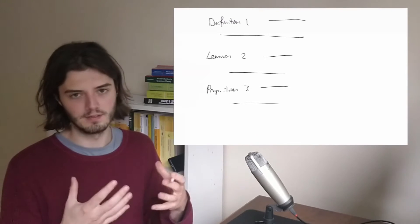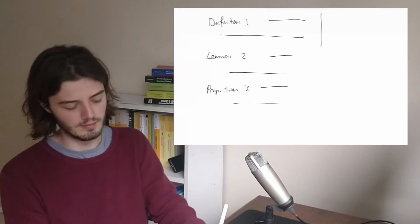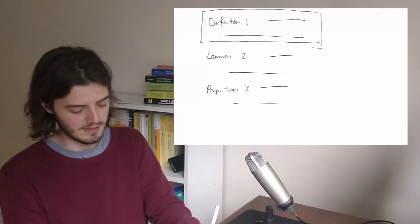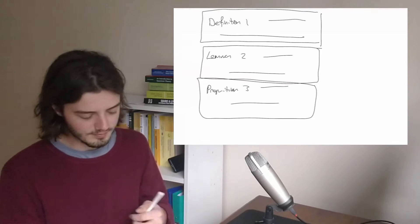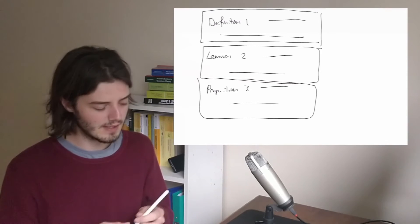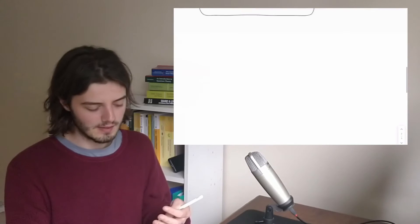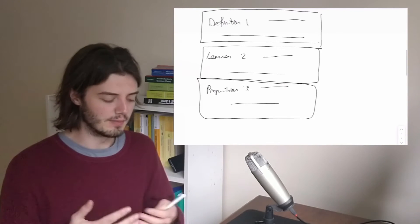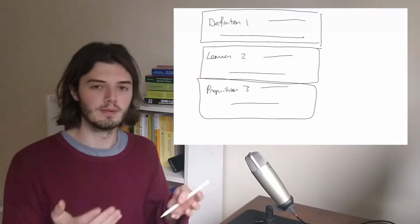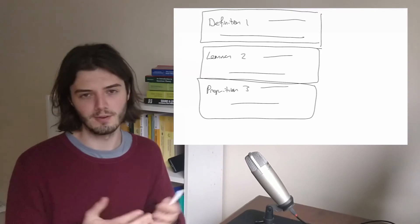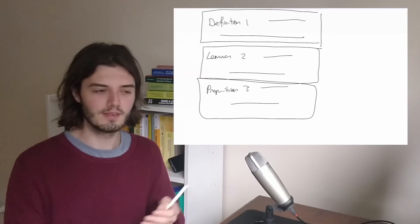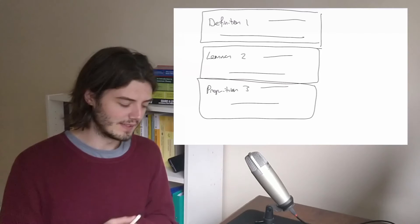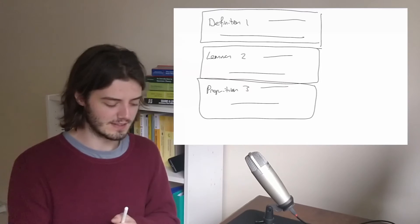For my atomic notes, the main idea is to just split off these propositions and lemmas and turn them into standalone notes. I tend to try and keep only one definition or one proposition per note, but sometimes with some concepts there'll be two definitions that are so closely linked that you'll always want to include both of them. So in that case I'll put both the definitions in the same note, but generally try and stick to this.